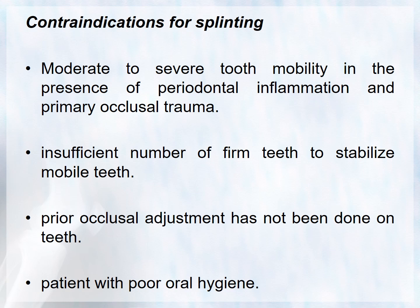Contraindications of splinting include: moderate to severe tooth mobility in the presence of periodontal inflammation; primary occlusal trauma; insufficient number of firm teeth to provide stabilization — if there is generalized mobility you cannot get support from adjacent teeth; if prior occlusal adjustment has not been performed, occlusal adjustment must be done before splinting; and patients with poor oral hygiene.